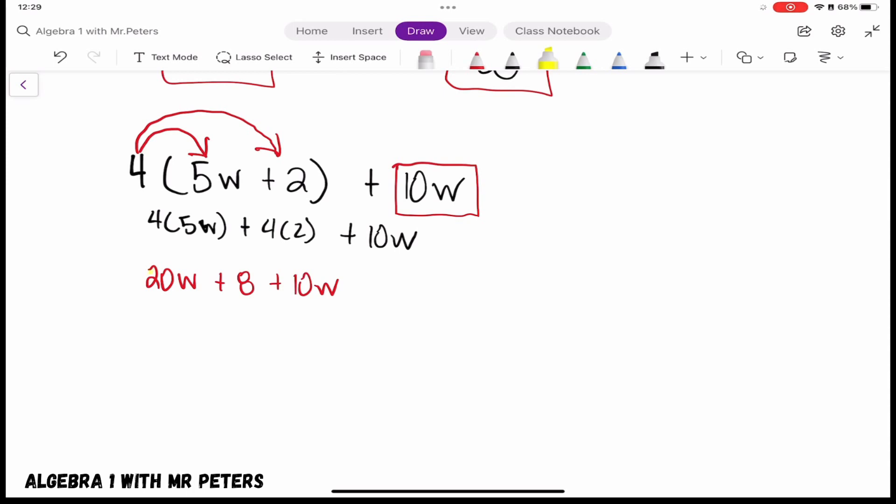There's two numbers or terms that have a w with it. So after we distribute, after we multiply, this is the part where we combine our like terms. When we combine them, 20 plus 10 gives us 30w, and we bring down the plus 8 because we can't add the 8—it's not like terms.